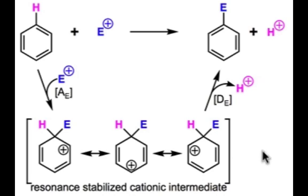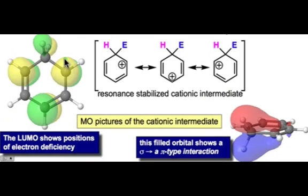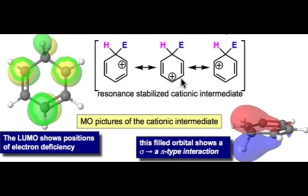Molecular orbital diagrams reveal the electronic features of this carbocation intermediate. We can see that the three carbons that have the largest contribution to the LUMO are located on the same three carbons where the carbocation exists in these resonance delocalized forms. Those are the sites where there's the greatest deficiency of electron density.